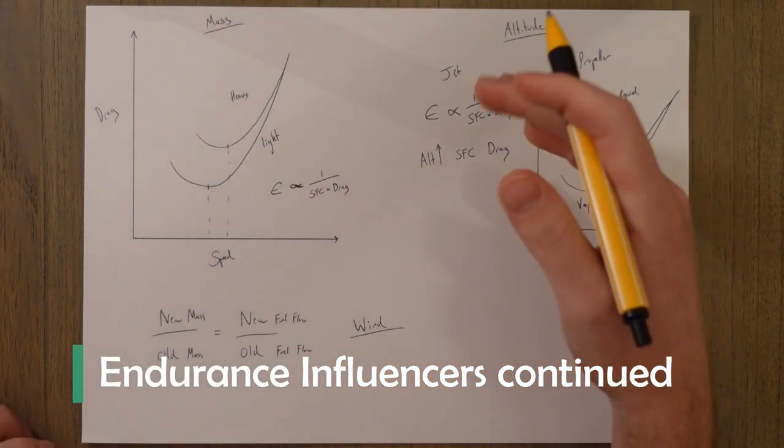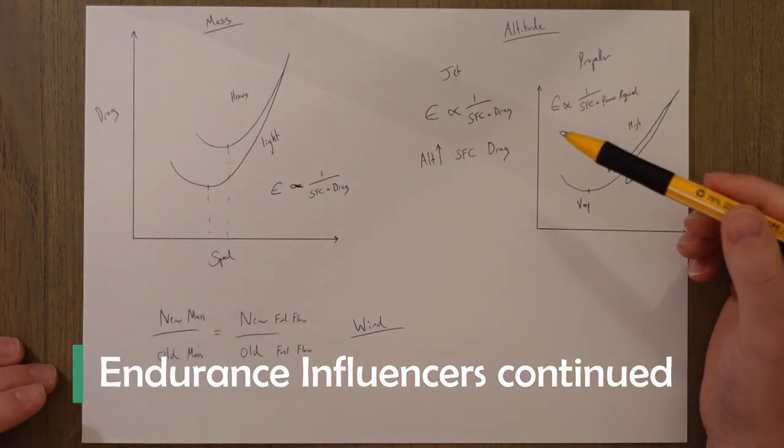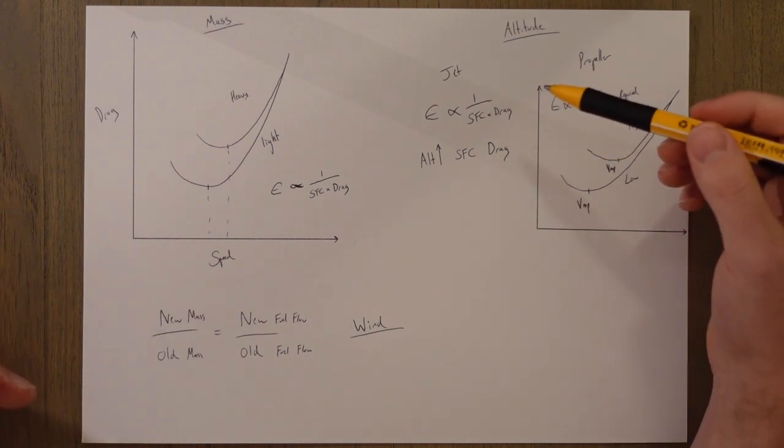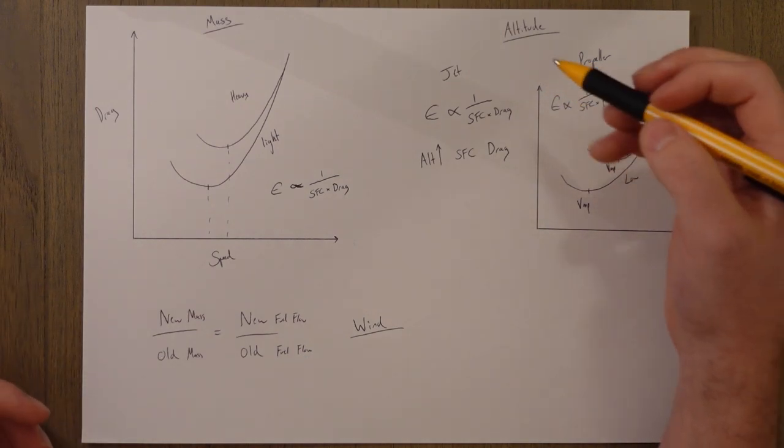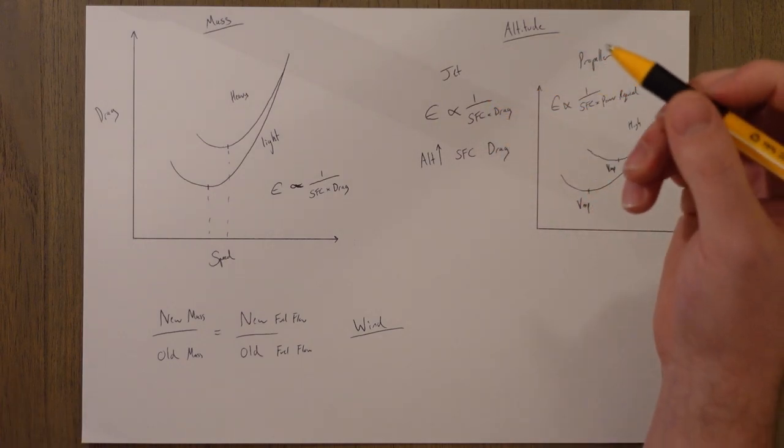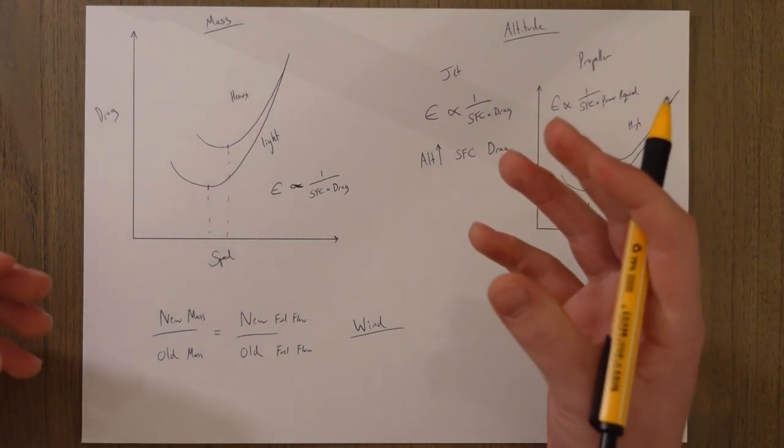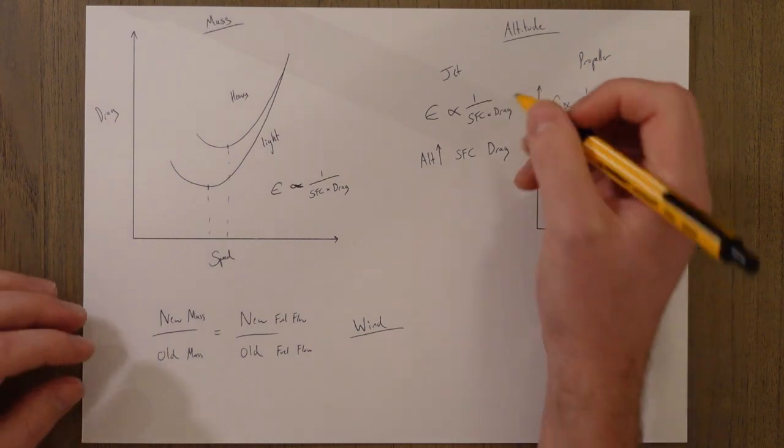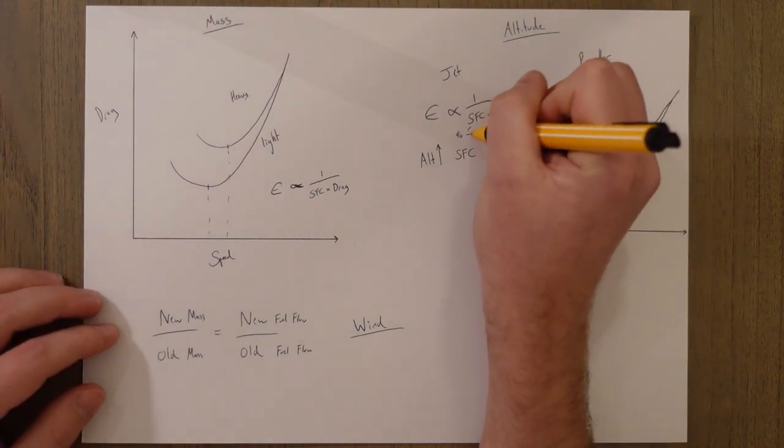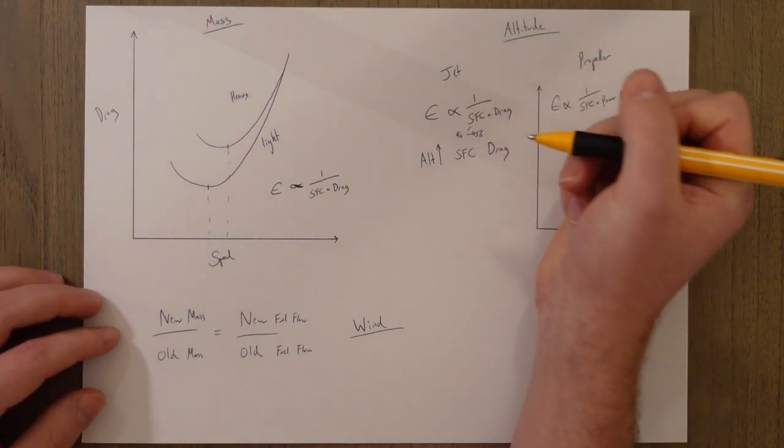Returning to the influencers then. Altitude is an important one to think about. So the best altitude for endurance is where we have the lowest specific fuel consumption and in a jet that's where the engine operates in its designed RPM usually about 90 to 95 percent of the maximum.